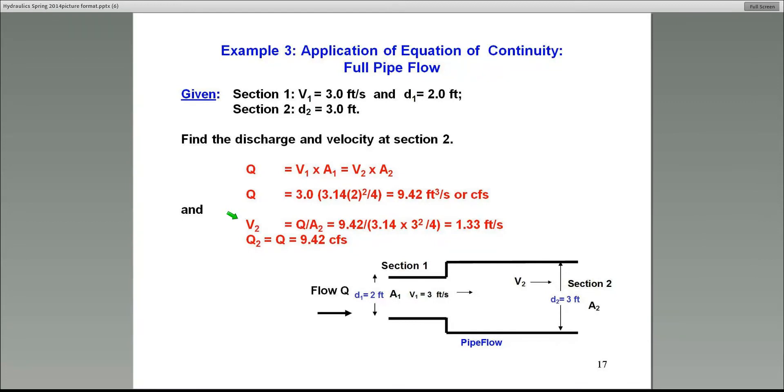In this case, the pipe size is bigger at Section 2. From 2 feet in diameter, it's gone to 3 feet in diameter. So we already know what to expect. The velocity is going to go down, which is basically what has happened. V2 is 1.33 feet per second as opposed to 3 feet per second at Section 1.